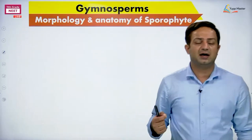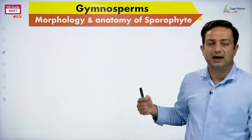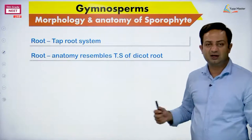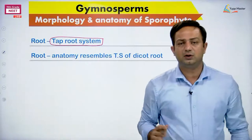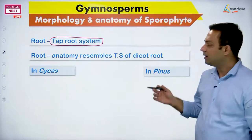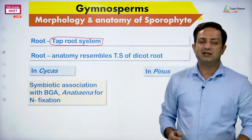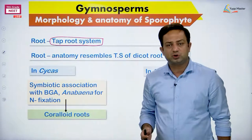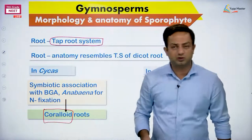The sporophyte is well differentiated with true root, true stem, and true leaves like any vascular plant, and anatomically resembles dicots. The root system is tap root. In Cycas, a special modification occurs — a symbiotic cyanobacterium called Anabaena is present in roots. Anabaena performs nitrogen fixation and gives a bluish-green color to the roots, making them coral-like, called coraloid roots.